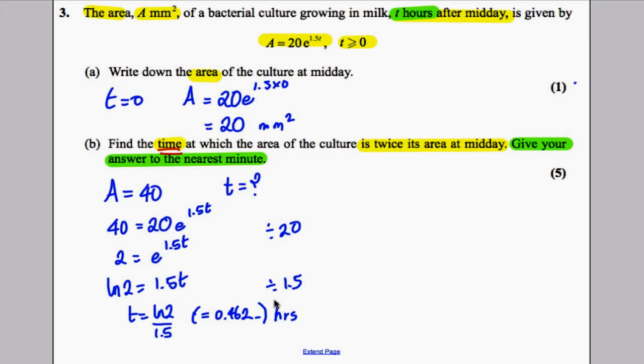So for minutes you multiply by 60, and you get yourself to the nearest minute, that would be 28 minutes. You get actually 27.7, which rounds to 28. So the time is therefore 12:28 PM, and underline your final answer, and you're done.